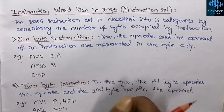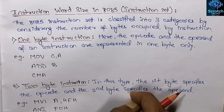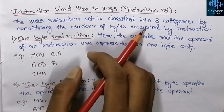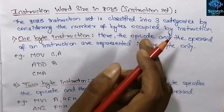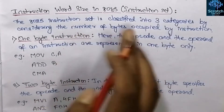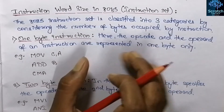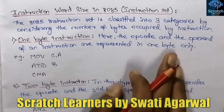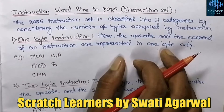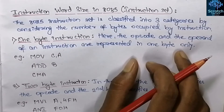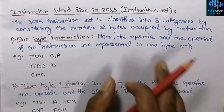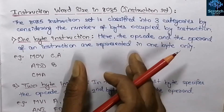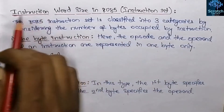Hello guys and welcome to our YouTube channel Splash Learners. In this video we are going to discuss about the instruction word size in 8085 microprocessor. We have discussed about the classification of instruction sets in 8085 according to their functions — data transfer, branching, arithmetic, logical — classified based on their functionalities. Here this is a classification of instruction set based on the word size, or rather based on the bytes occupied by the instructions.